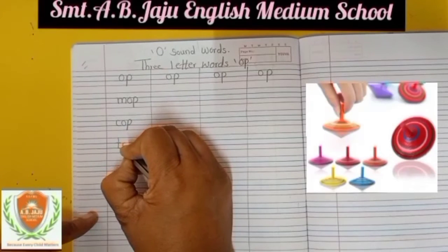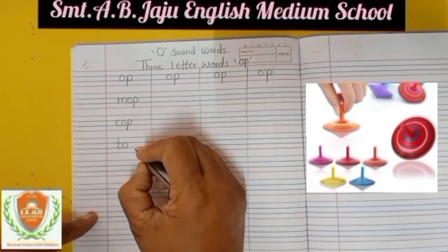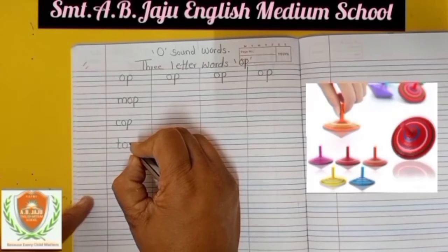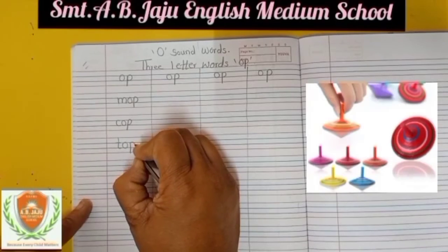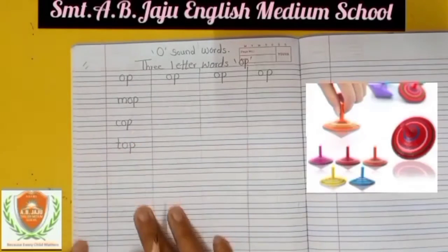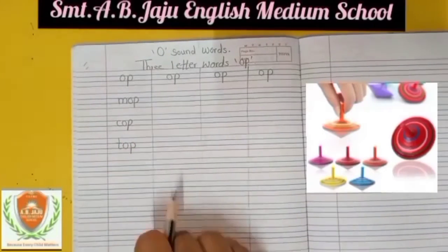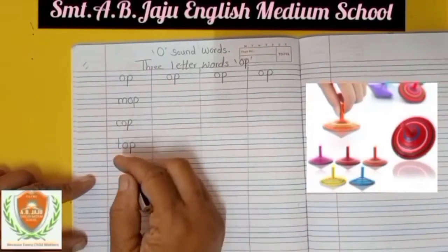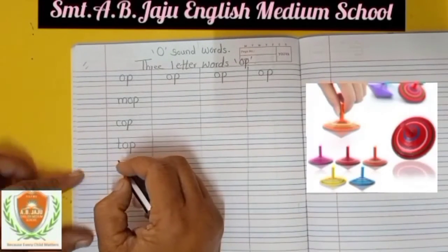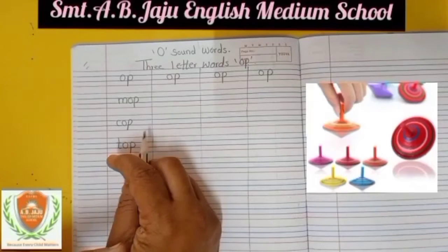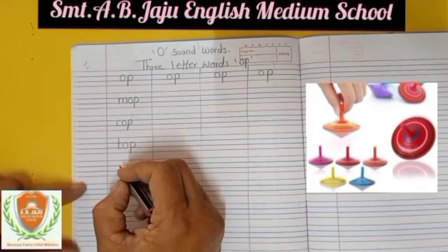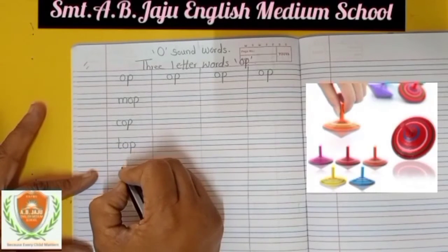Write small T, sound of T is T. Small O, sound of O is O. Small P, sound of P is P — T-O-P, top. Top means bhaura — it is a spinning toy. See this picture.